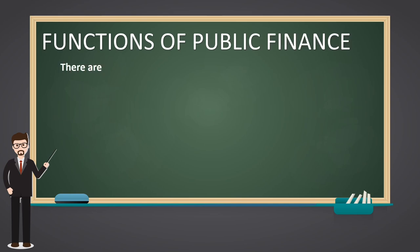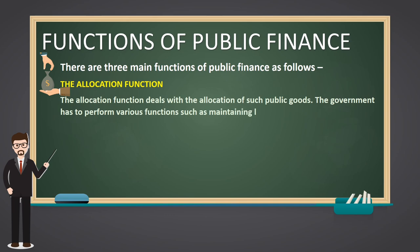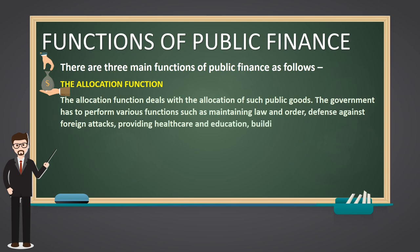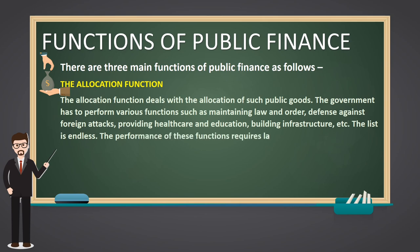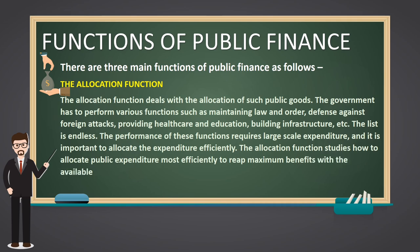There are three main functions of public finance. The Allocation Function deals with the allocation of public goods. The government has to perform various functions such as maintaining law and order, defense against foreign attacks, providing healthcare and education, building infrastructure, and more. The performance of these functions requires large-scale expenditure, and it is important to allocate that expenditure efficiently. The allocation function studies how to allocate public expenditure most efficiently to reap maximum benefits with the available public wealth.